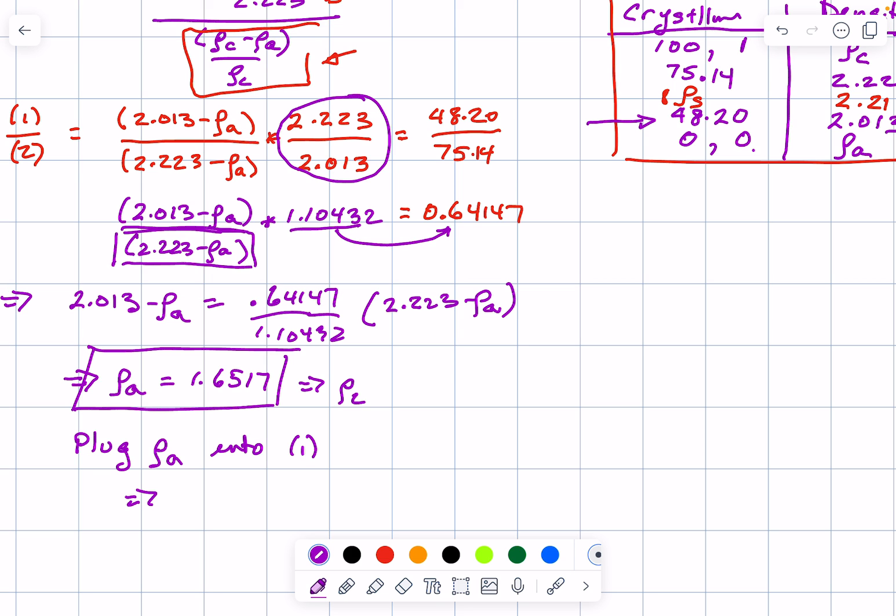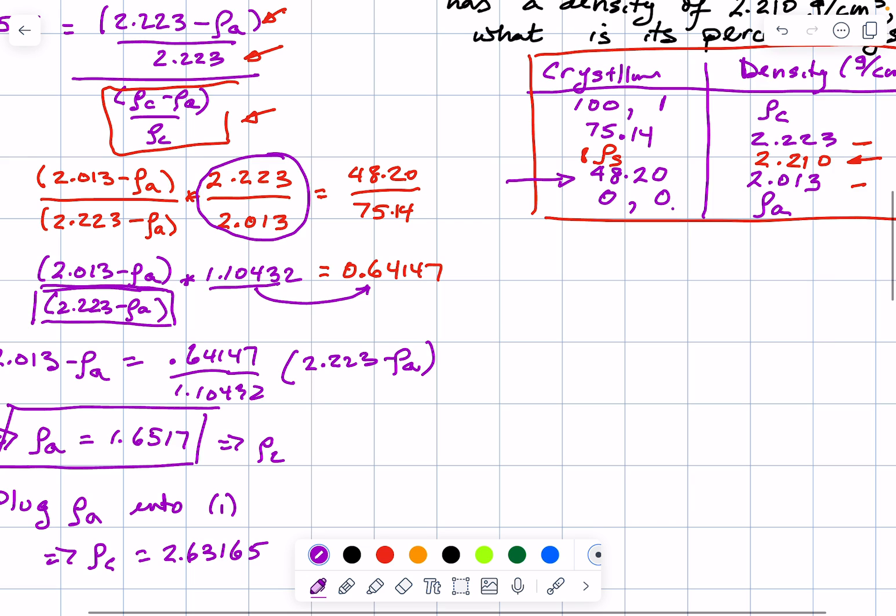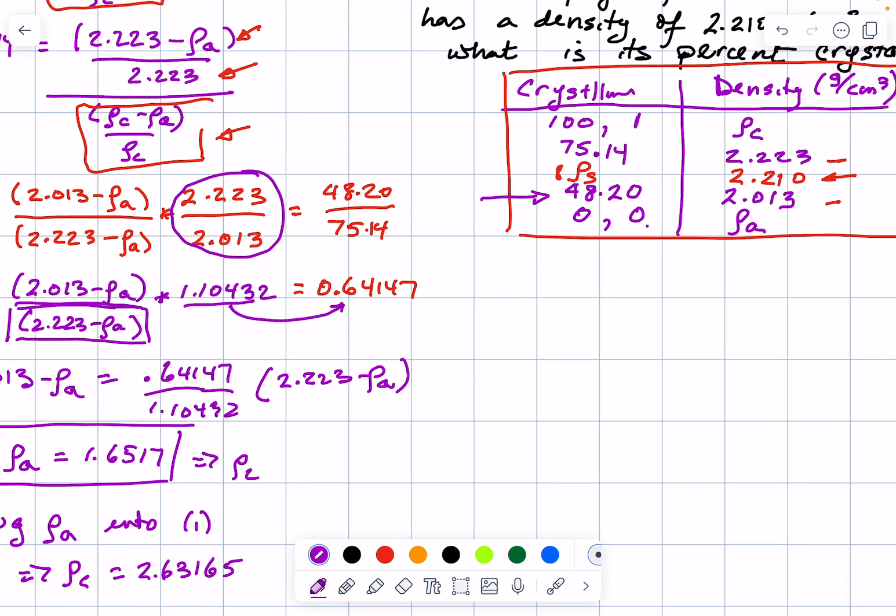When you do that, you end up finding that the density of the crystalline phase is 2.63165. For the crystalline phase, I got 2.63165, and for the amorphous phase, I got 1.6517.